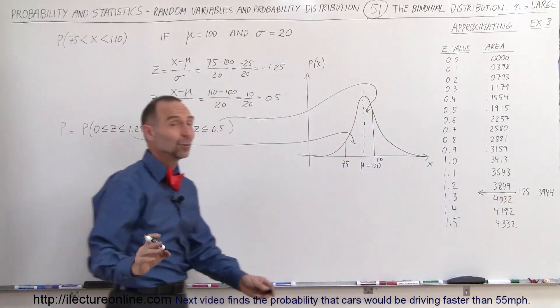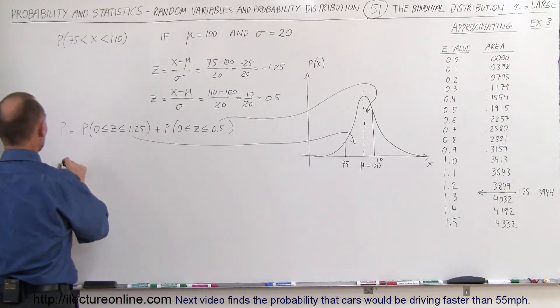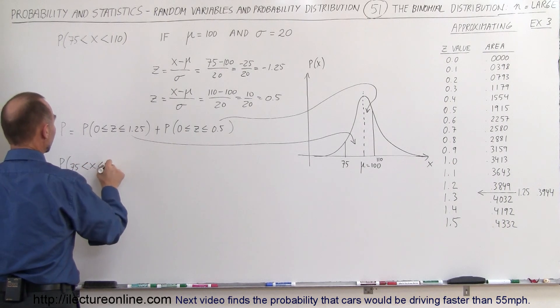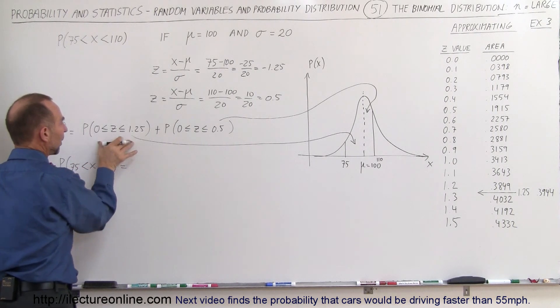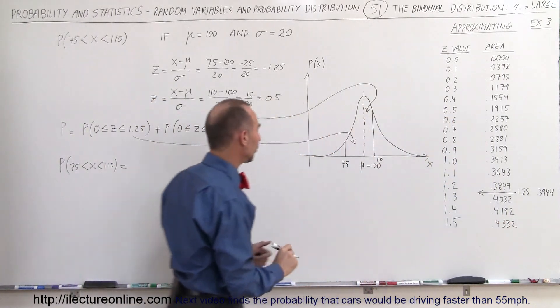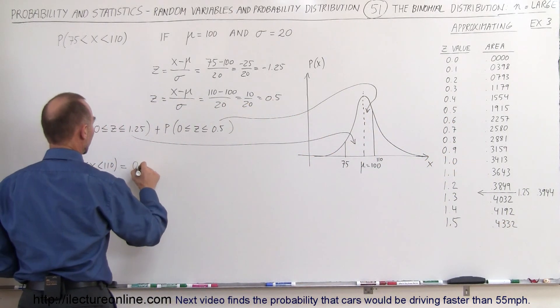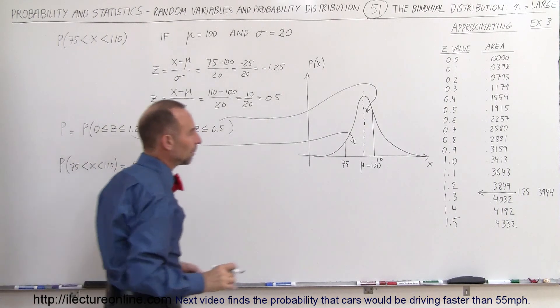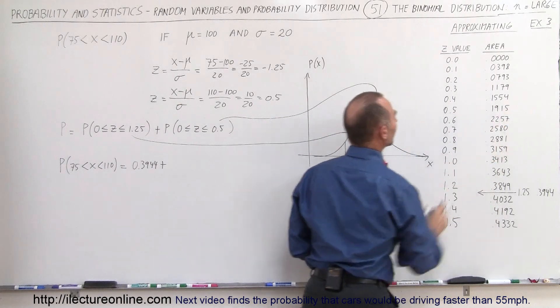Notice I added another value, which we're going to need for this table. So the probability that 75 is less than x less than 110 is equal to this probability, which will be equal to 0.3944, plus this probability 0.5, which is 0.1915.